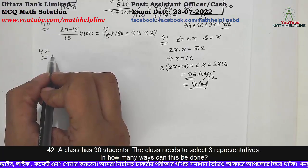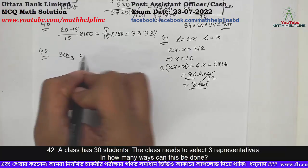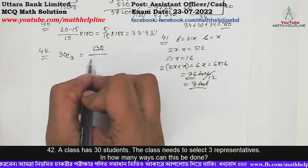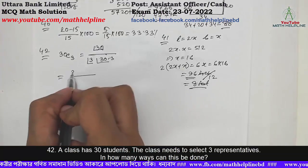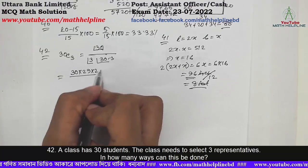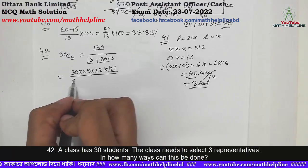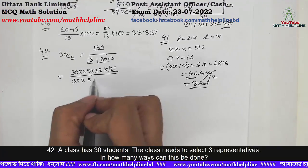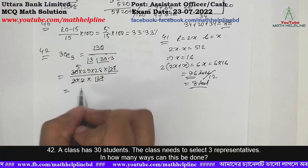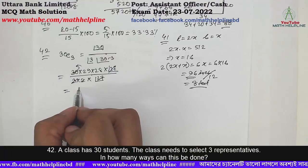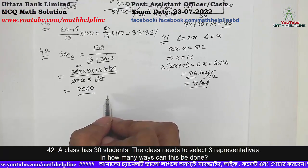For selecting 3 representatives from 30, we use combinations. 30 choose 3 equals 30 into 29 into 28 divided by 6, which gives 4060. So there are 4060 ways to select the representatives.